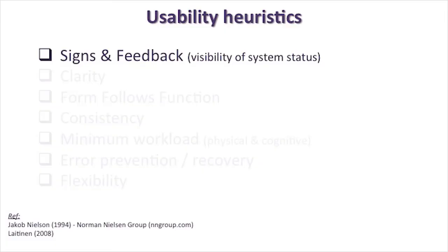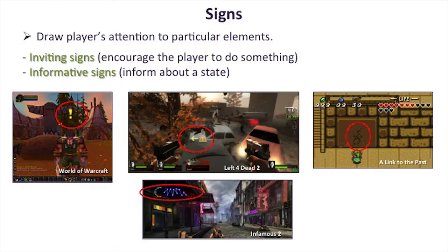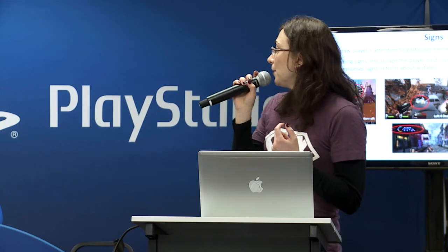Signs and feedback — of course, this is really important. Give meaningful information about the system. I make a little differentiation between two sorts of signs: inviting signs that encourage the player to do something, and informative signs about a state. What I tell designers is it's really important to differentiate these two, because inviting signs have to really stand out and draw attention from the player, whereas informative signs have to be legible but should not be in your face — unless you get into a critical state like very low health.